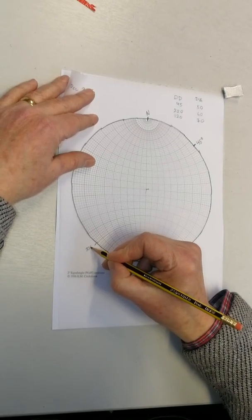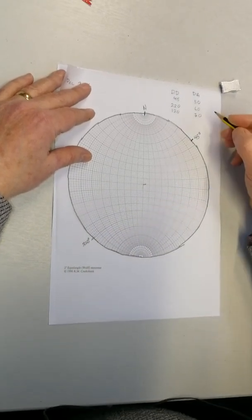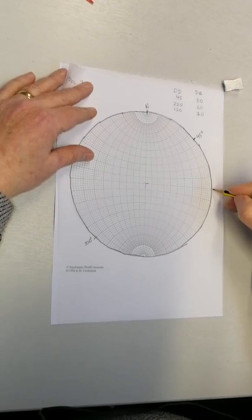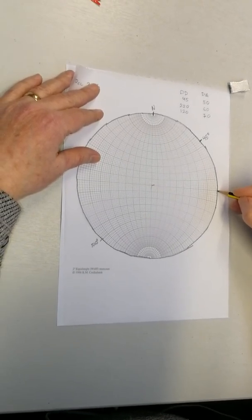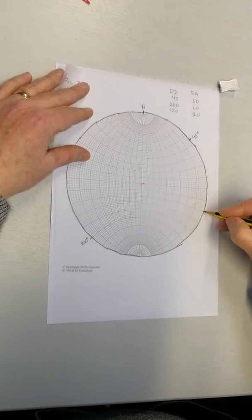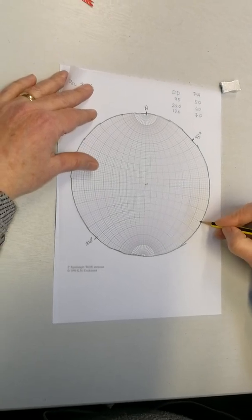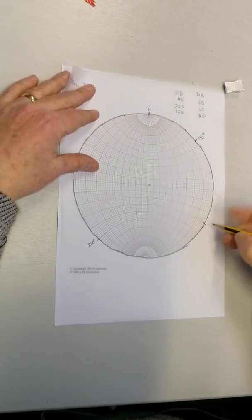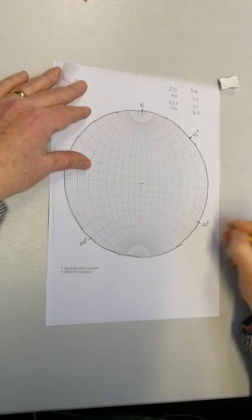And the last one is 120. Due east is 90, so there's 90, 100, 110, 120. And I've now marked that as 120.